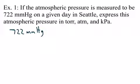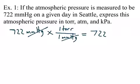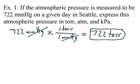From the equation sheet, a millimeter of mercury and a Torr are equal — in one Torr, there's one millimeter of mercury. So if you set this up, the conversion factor gives you 722 Torrs directly. You probably didn't have to show work for this one because they are equivalent.